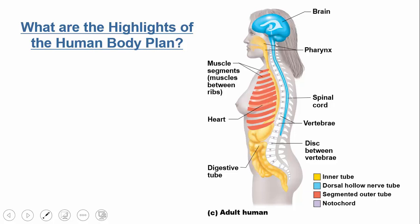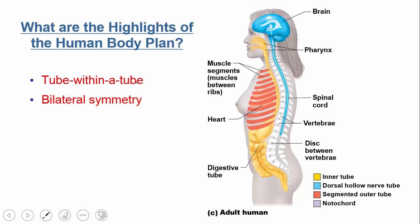What are some highlights of the human body plan? First, the human body can be considered a tube within a tube: the first tube is the digestive system, the second is the outer body. Second, humans have bilateral symmetry — a sagittal cut would show the left side looking like the right. Third, humans have a dorsal hollow nerve cord, which develops into the brain and spinal cord.